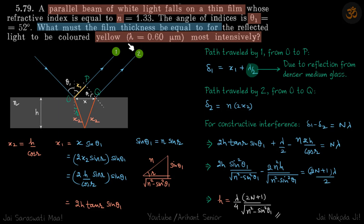With this lambda there must be constructive interference between ray one and ray two. The path difference due to reflection and the ray going in and out must be equal to n lambda. That is the concept.